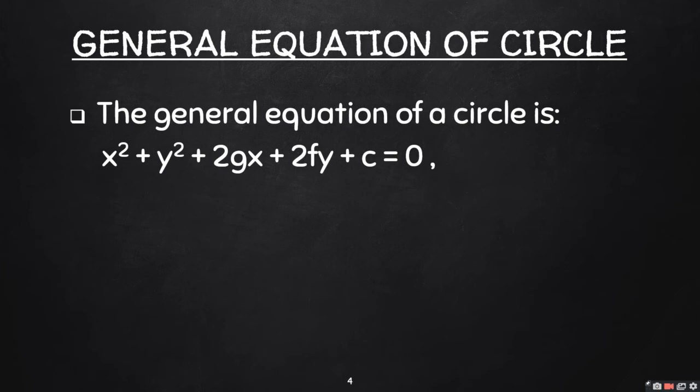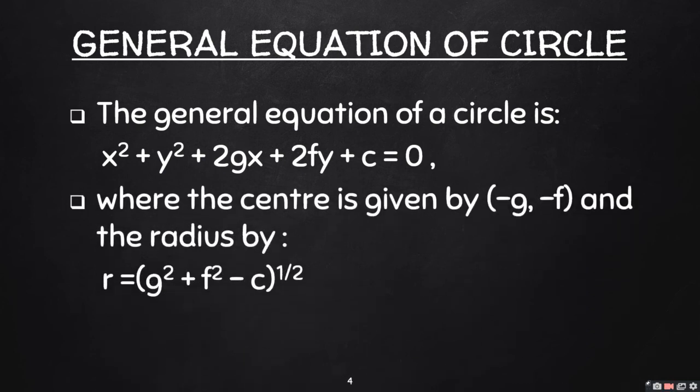The general equation of a circle is x² + y² + 2gx + 2fy + c = 0, where the center is given by (-g, -f) and the radius by r = √(g² + f² - c).